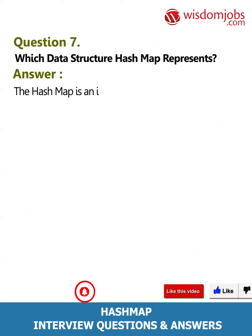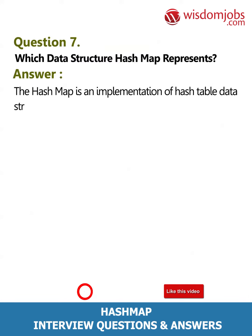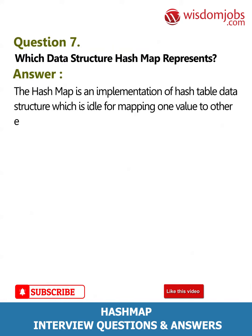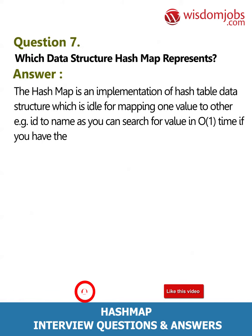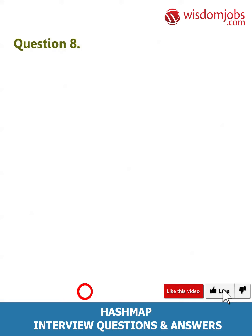Question 7: Which data structure does HashMap represent? Answer: HashMap is an implementation of the hash table data structure, which is ideal for mapping one value to another — for example, ID to name. You can search for a value in O(1) time if you have the key.